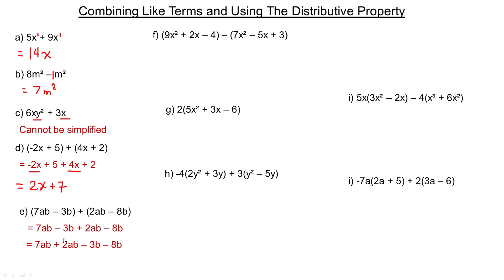Just make sure you keep the sign — it's subtracting 3b, so that sign goes with the 3b. The plus 2ab stays as plus 2ab. So 7ab plus 2ab gives 9ab. And negative 3b subtract 8b is negative 11b, so we write minus 11b on the end.